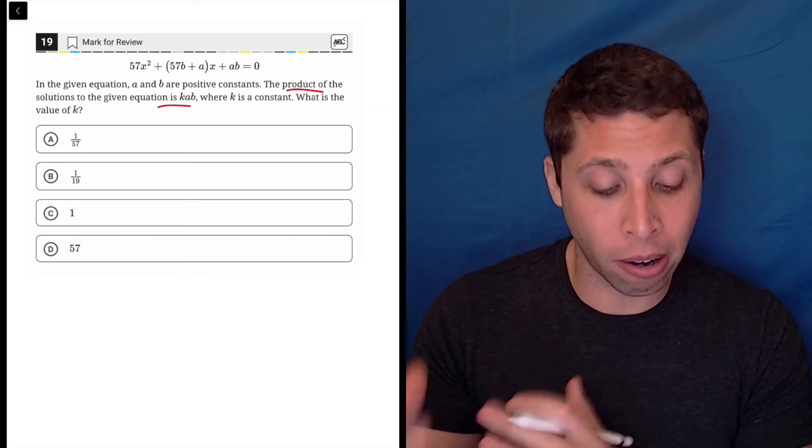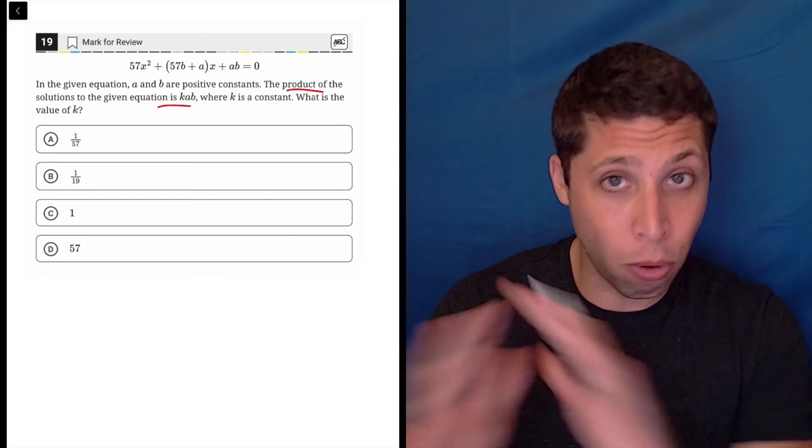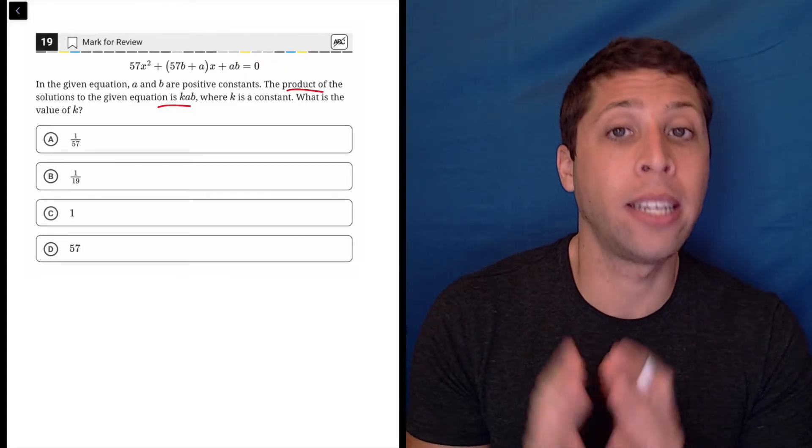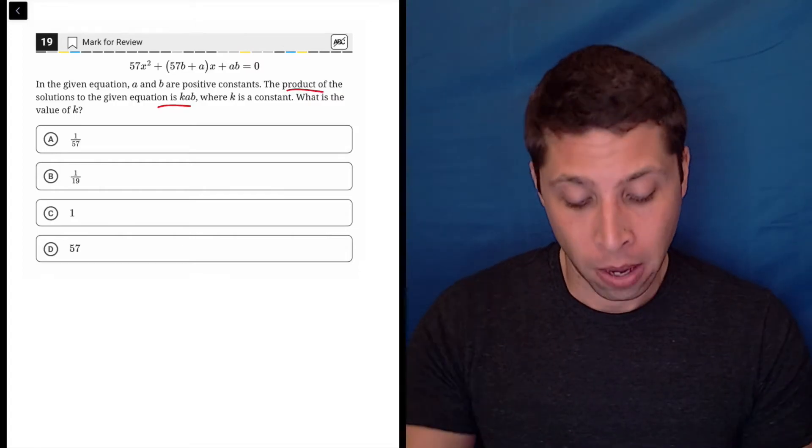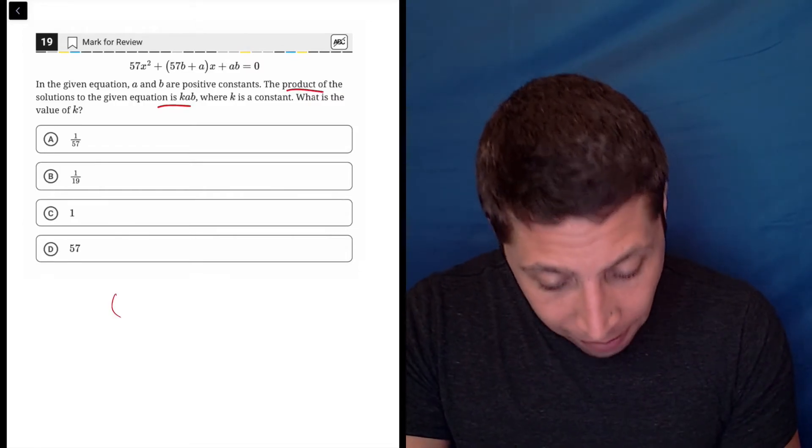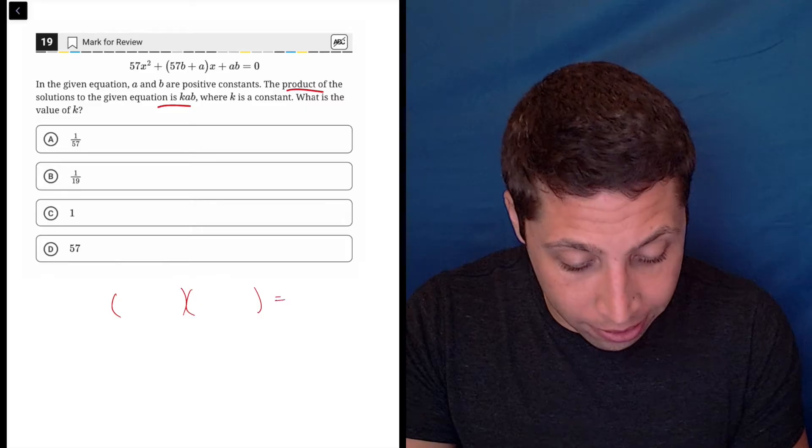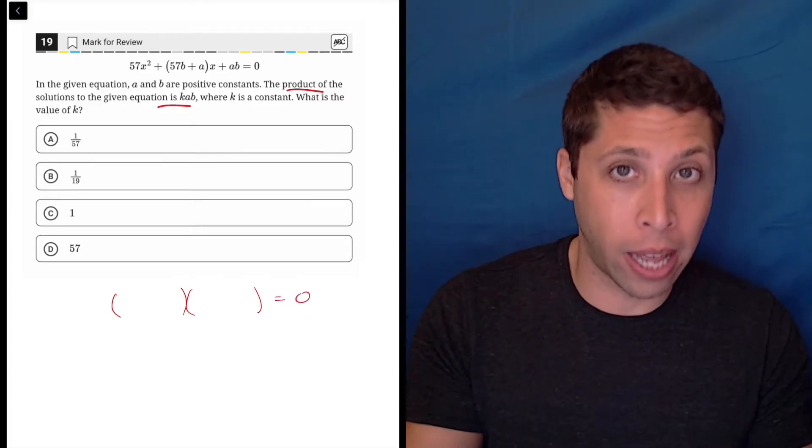Basically my instinct is, alright, normally if this were a normal quadratic, my way of finding the solutions would be to factor. So okay, I need to factor this so it looks something like this, and then it would equal zero and I would know the factors.